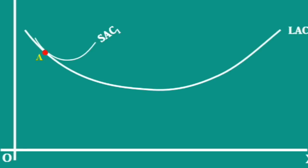SAC1, is tangent to the long run average cost curve. Again, it shows M units are produced at an average cost of MA. MA is the minimum possible average cost of producing M units.